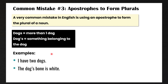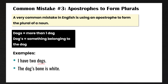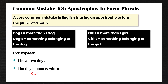For example: I have two dogs — this is correct because we're talking about more than one dog, so we add an S. In the second example, 'the dog's bone is white' — we're talking about one dog that has a bone; the bone belongs to the dog, so we use an apostrophe S to show possession. Girls with just an S means more than one girl. Girls with an apostrophe S means something belonging to the girl.